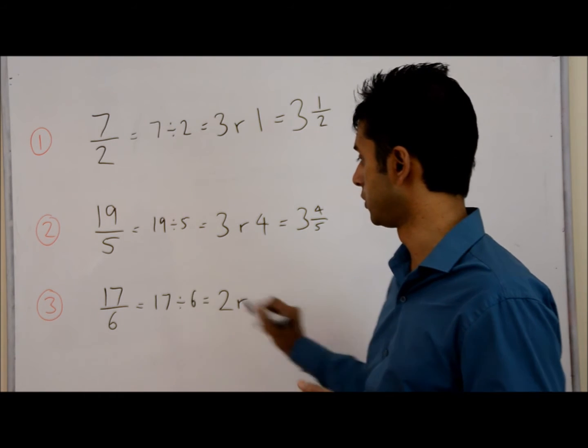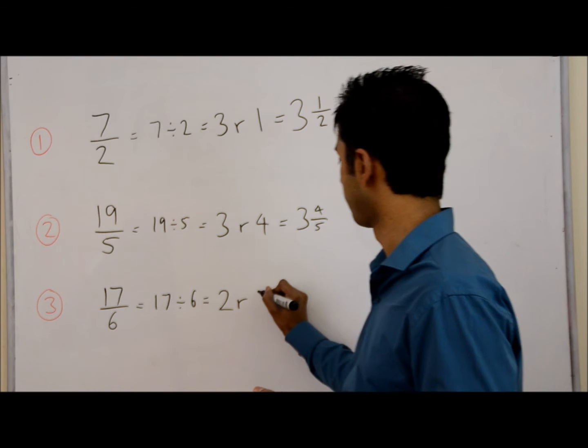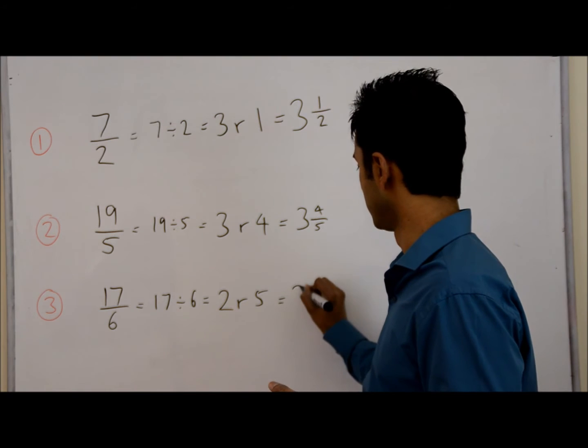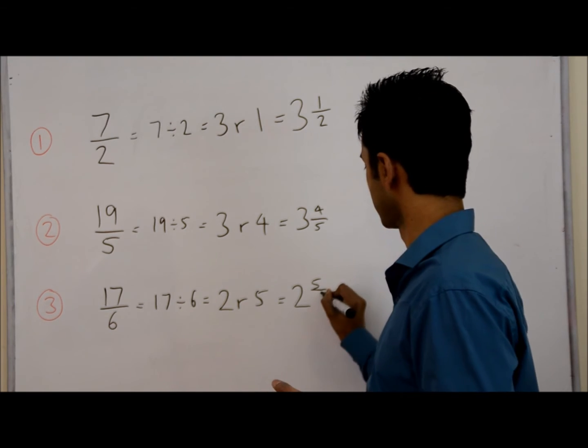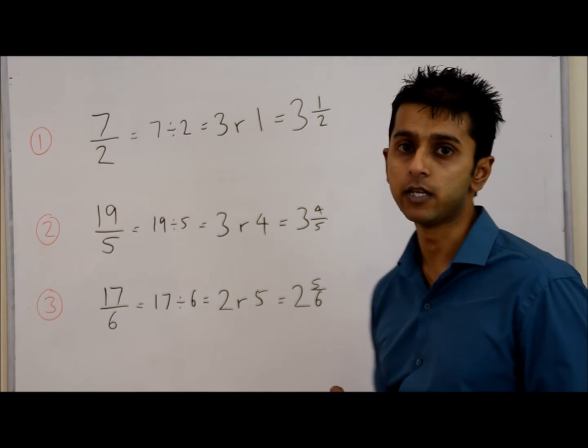Remainder, so 6 times 2 is 12, so your remainder is 5. So this gives us 2 and 5 over 6. So the answer to this one is 2 and 5 sixths.